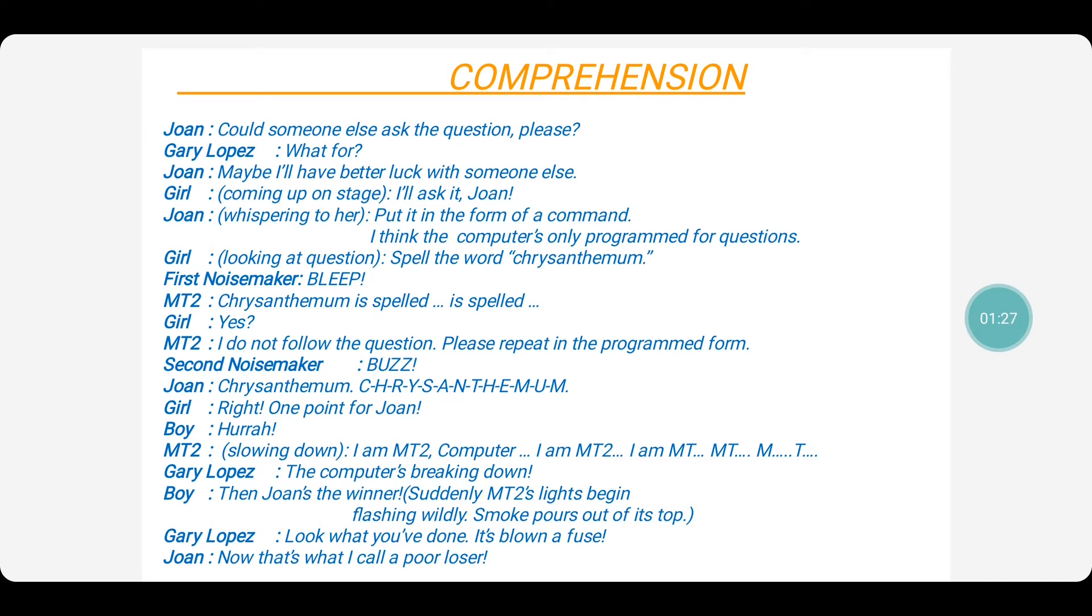That is, only for interrogative sentences it can answer, not for imperative sentences. So here Joan makes an idea. He calls a girl from the audience and asks her to put the question in the form of a command. As you know, computers cannot do which is not programmed for them. So as the computer was not programmed for a statement or an imperative sentence or a command, it started breaking down.